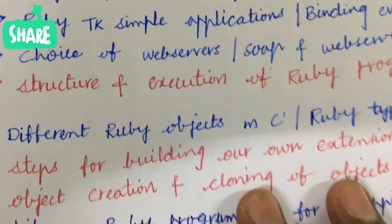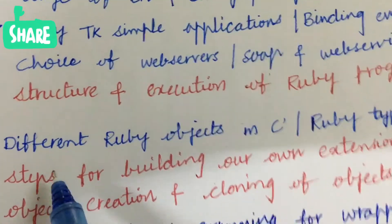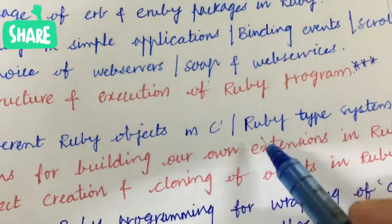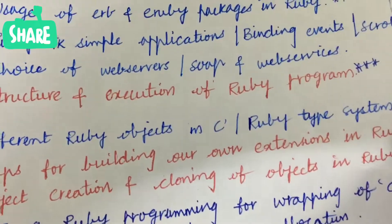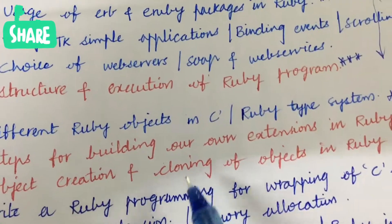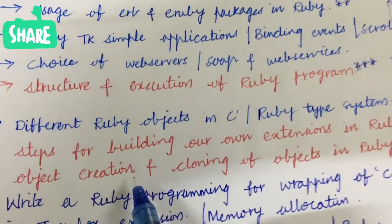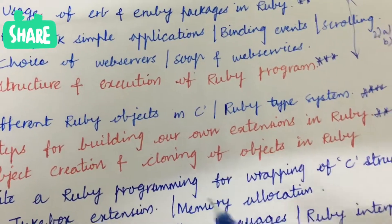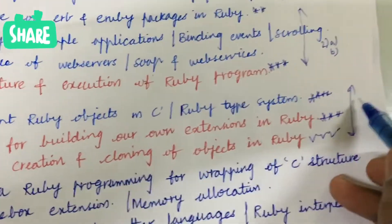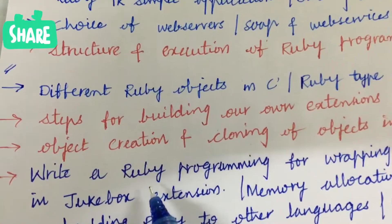Make sure to work out how to write a theory paper — I have uploaded it in this channel, please go through it and score better marks. The next questions cover different Ruby objects in C as well as the Ruby type system, which are also important gunshot questions. Steps for building your own extension in Ruby — explain in detail. Later, object creation and cloning of objects in Ruby is asked several number of times. From these three concepts we can expect 3a as well as 3b.